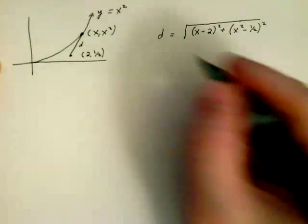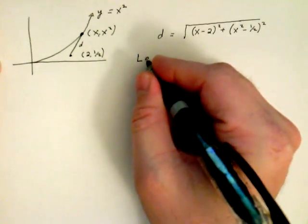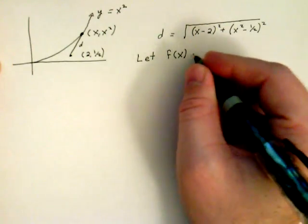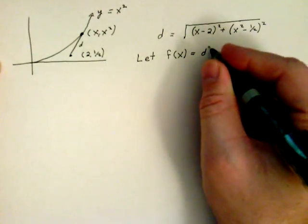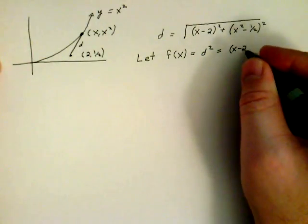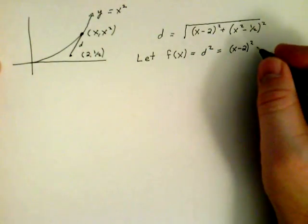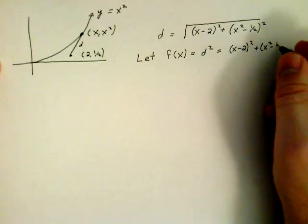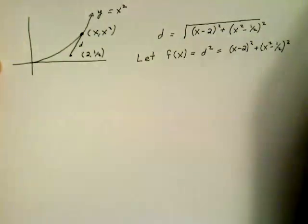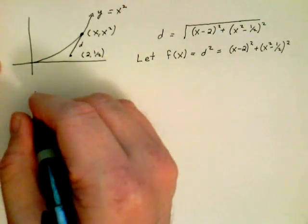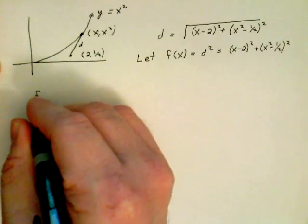But, oh no, that's hard to take the derivative of. So what I'm going to do is I'm going to make a function and I'm going to call it f of x, but I'm going to square d. That way that pesky radical will go away. Look, now I have x minus 2 squared plus x squared minus 1 half quantity squared. That's so much neater looking, guys. And it will also find the same minimum as if I didn't square it.